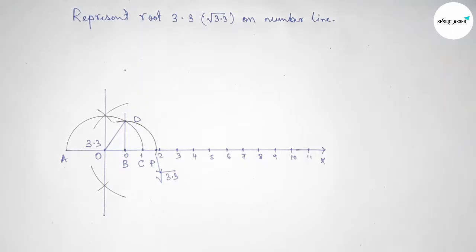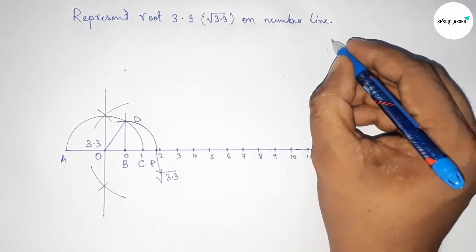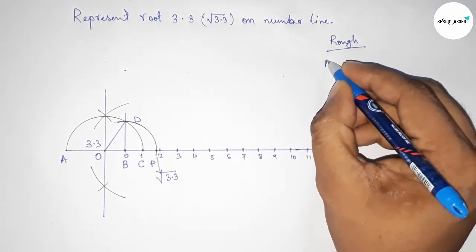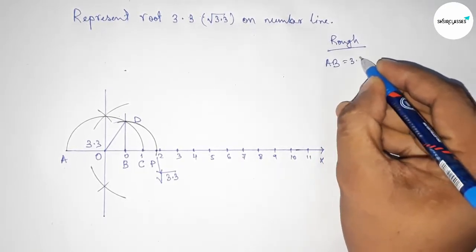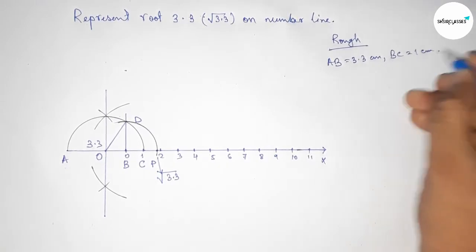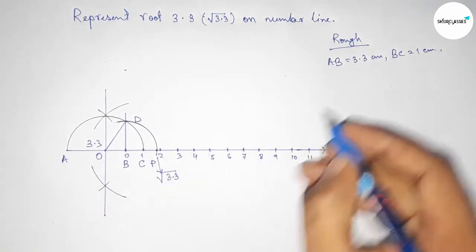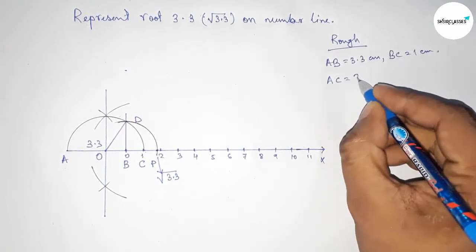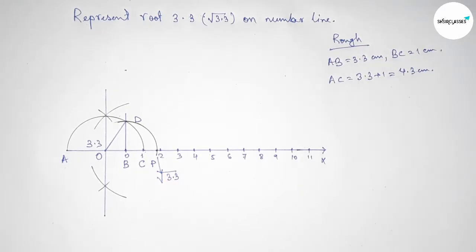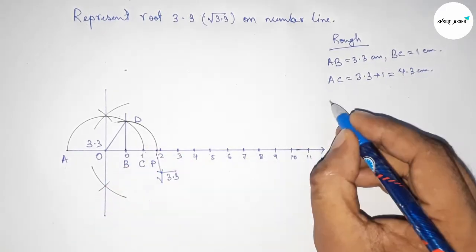Let's discuss the calculation. Given AB equals 3.3 centimeters and BC equals 1 centimeter, so AC equals 3.3 plus 1, which is 4.3 centimeters. Now the radius OA, OD, and OC, we can write as 4.3 by 2 centimeters.